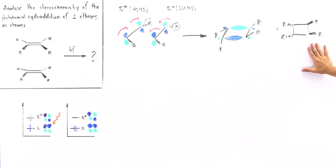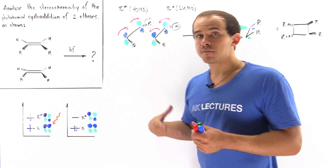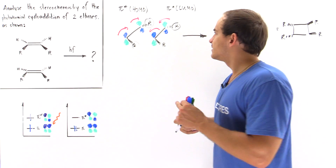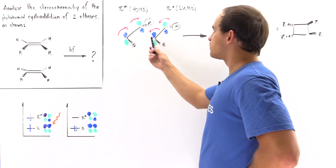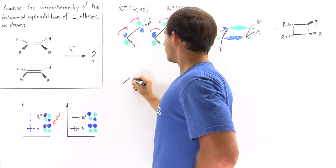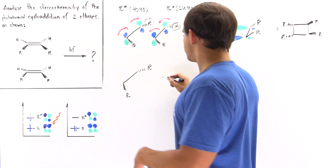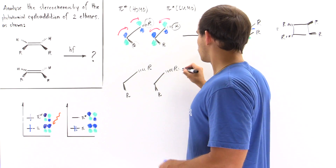This gives us one of our products with that stereochemistry — two R groups up and two down. However, this is not the only molecule that can form. We can have another molecule form in which all groups point in one direction. To see how that forms, let's take a look at the following orbital diagram using the same exact molecule, with R groups oriented the same way.